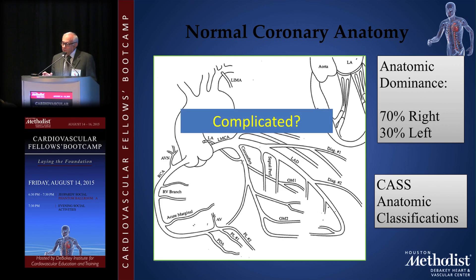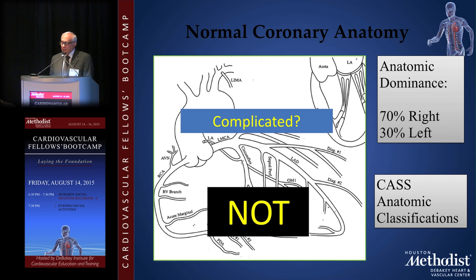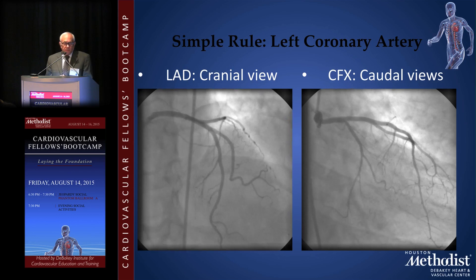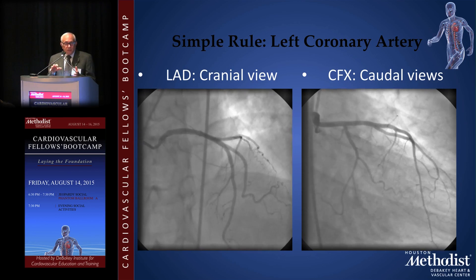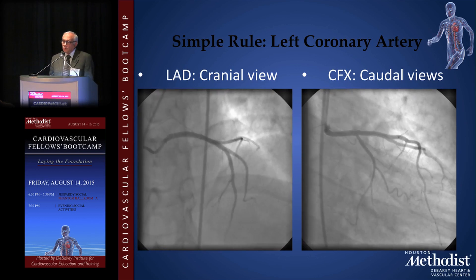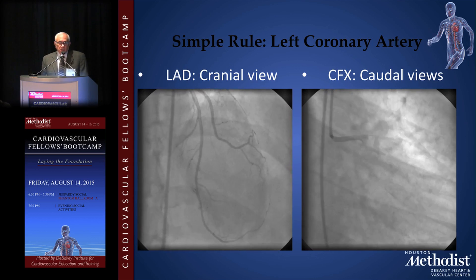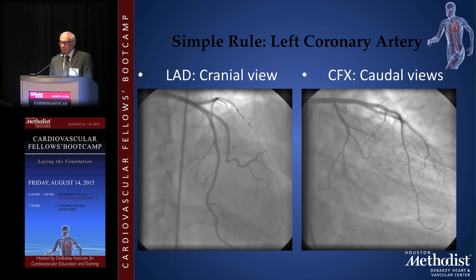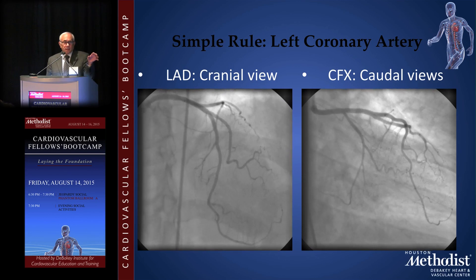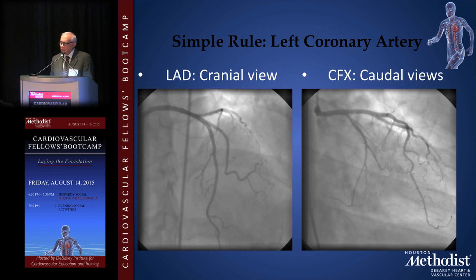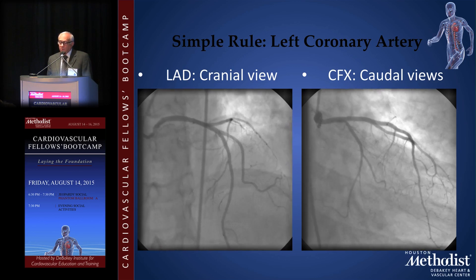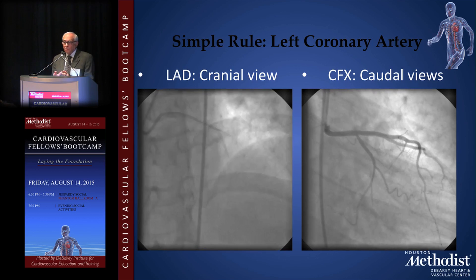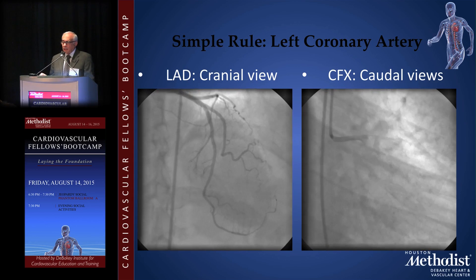The coronary artery by appearance looks very complicated, but in reality it is not. There are some very simple rules. For the left coronary artery, if you want to see the left anterior descending, focus on the cranial views — AP cranial, right anterior oblique cranial, left anterior oblique cranial, as shown on the left side of your screen. This really brings out the LAD, but does not help with the circumflex system.